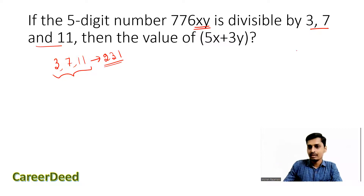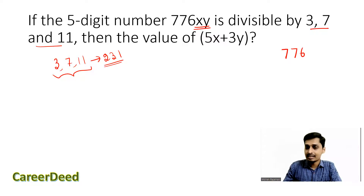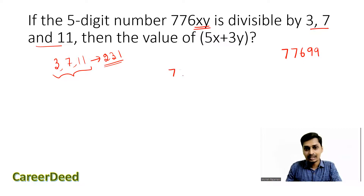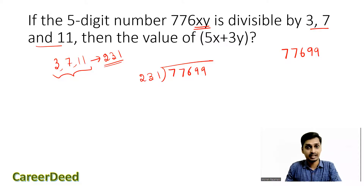Now we write the highest number of the 2776-series, which is 27699. We divide 27699 by 231 to find the multiple of 231 below 27699. 3 times 231 gives 693. So 27699 minus 693... working through the long division, we find the remainder.